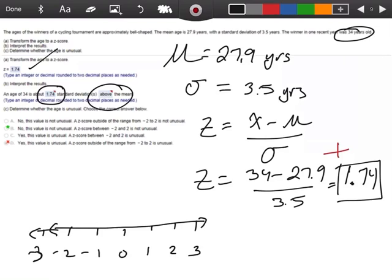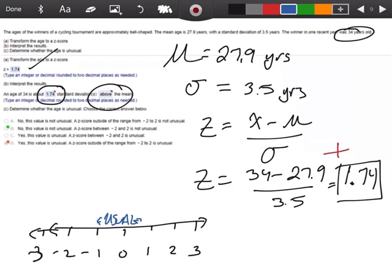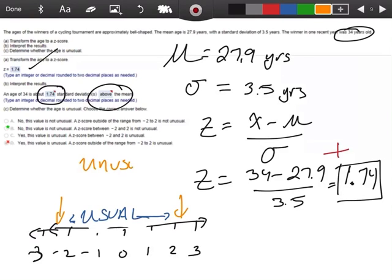We have 0 and 1 and 2 and 3 and negative 1 and negative 2 and negative 3. What we say is that these are usual scores. Anywhere between—actually, it goes all the way to 2. So usual scores are between negative 2 and positive 2.